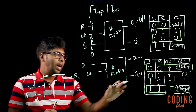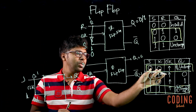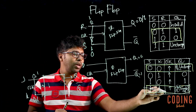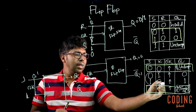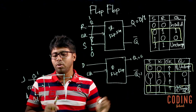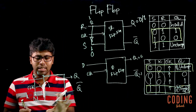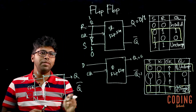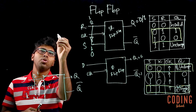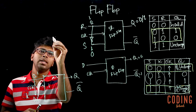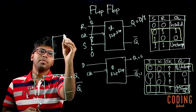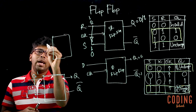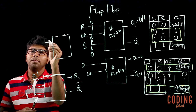The possible inputs are 0, 0, 1, 1. This is the PowerPoint showing the T flip-flop circuit and the actual bit circuit.